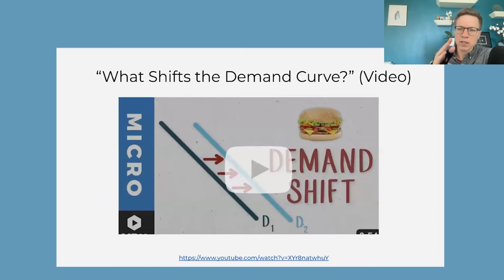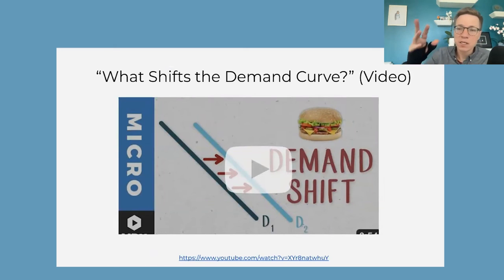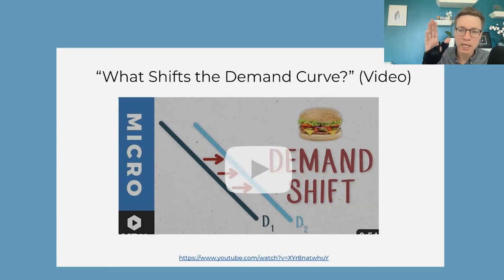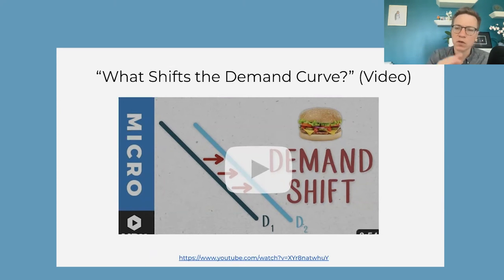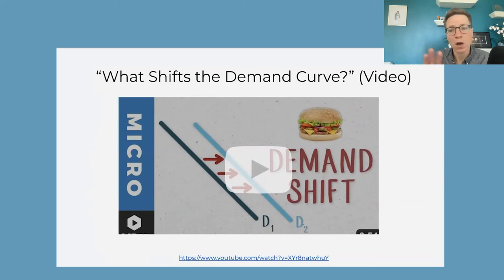The answer is no, because the curve itself has changed. The fundamentals have changed, describing that relationship between price and quantity. Something different has happened — Taylor Swift is in town. So now the demand curve for hotels has totally changed because there's a new element: Taylor Swift. The curve has shifted. The demand curve just describes the relationship between price and quantity, all else being equal, assuming nothing changes.